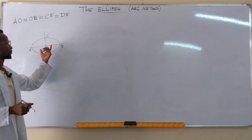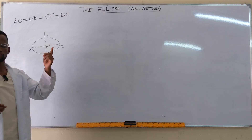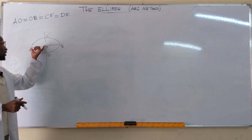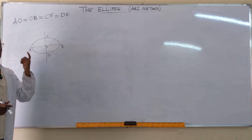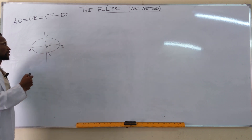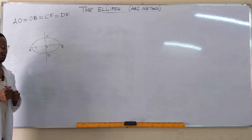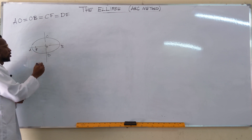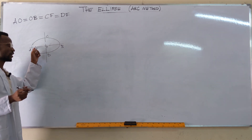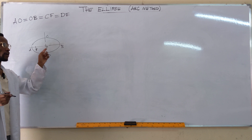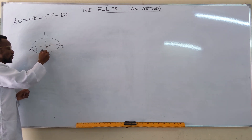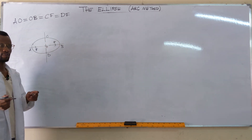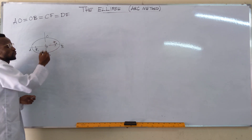If you have an ellipse and you want to find the focal point, you get the distance which is half the major axis, place your compass at point C, and strike an arc along the major axis. You will find the focal point. You can also place your compass at point D and strike — it lands at the same point. We call these focal point one and focal point two.